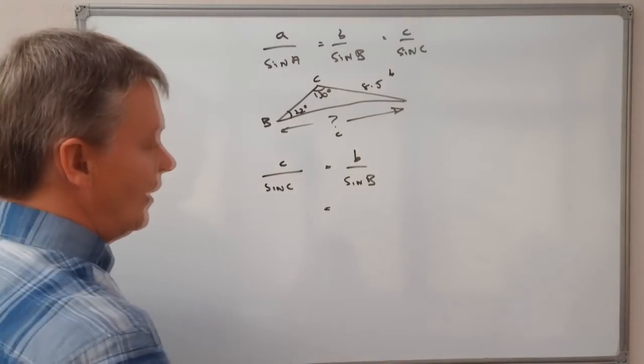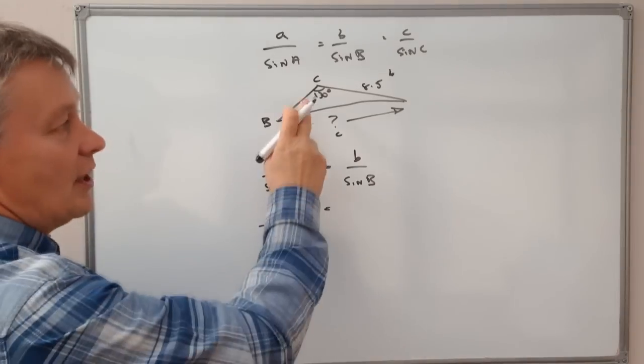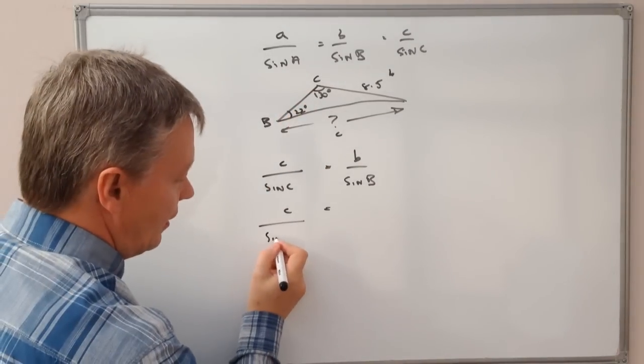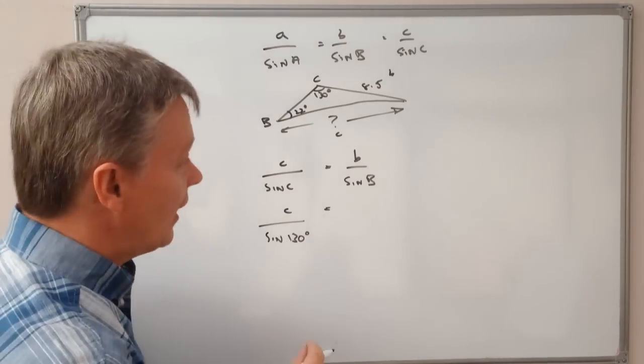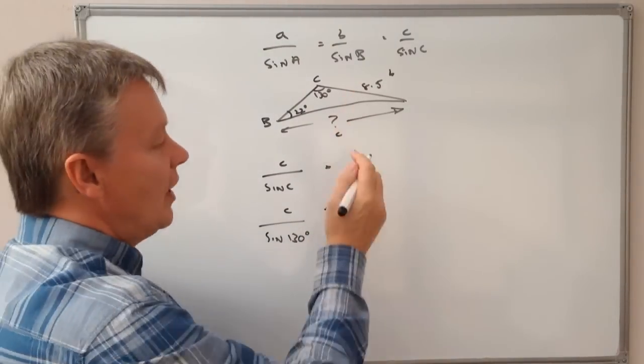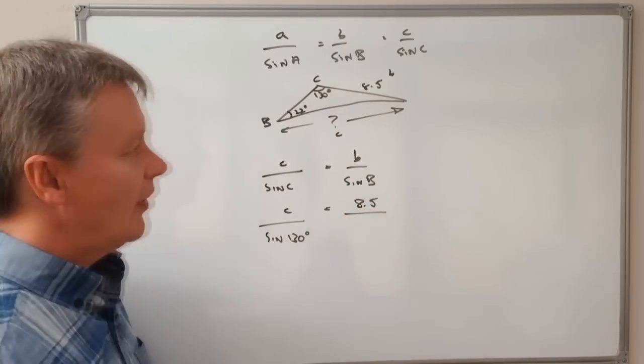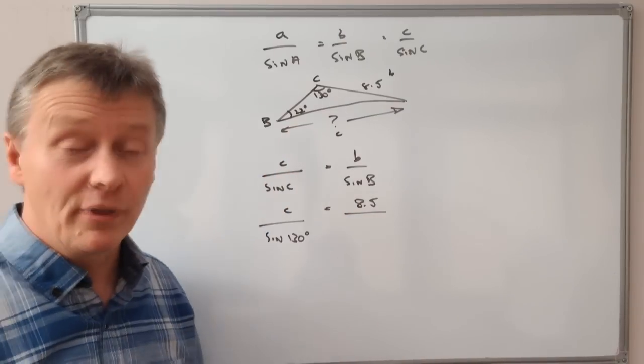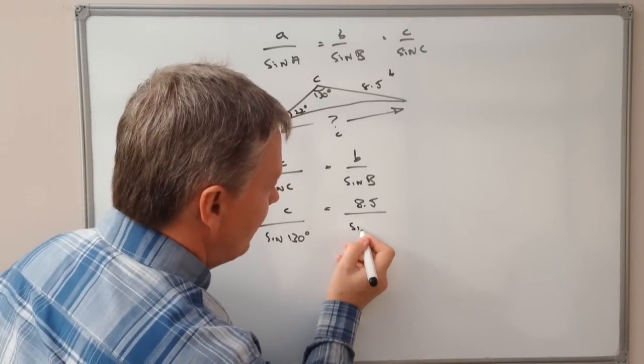Let's put some detail into that. C we don't know, and sine C we do, because it's sine of 130 degrees. Next bit is B, which we know is 8.5, and that's divided by sine B, which is the sine of 22 degrees, so I'm going to put that in as well.